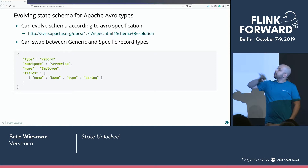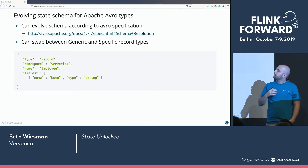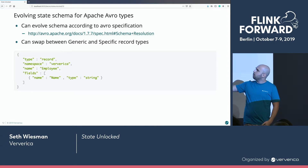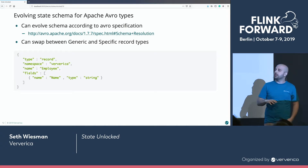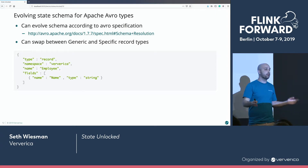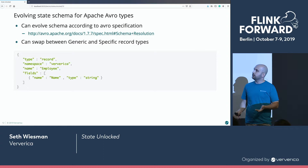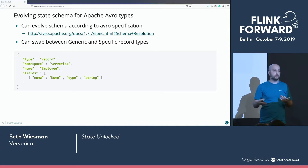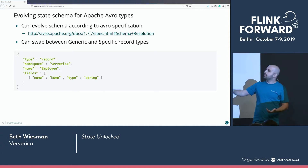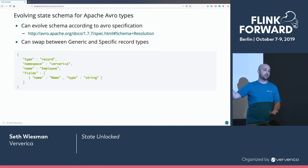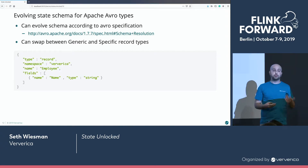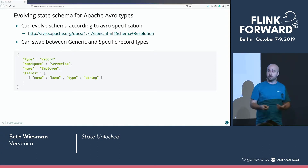As of Flink 1.8, we support schema evolution for Apache Avro — specifically the 1.7 spec. So we can add and remove types, and do all the things that Avro supports. There's a lot of flexibility here. I really encourage all of our users to use Avro for their state types in production because it has such well-defined schema semantics. We can even swap between generic and specific record types, so there's a lot of flexibility in what we can do.